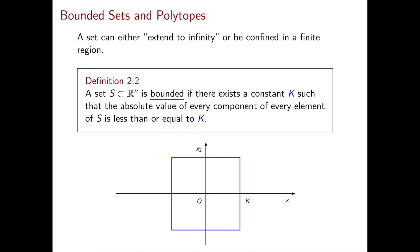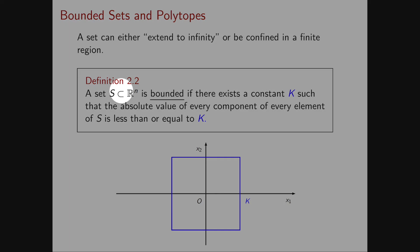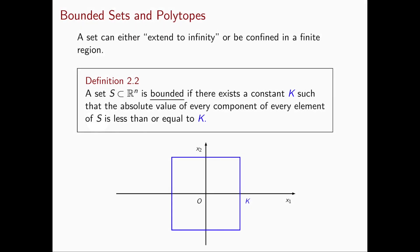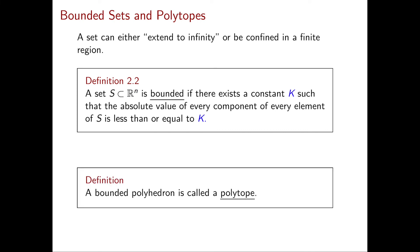To introduce the third fundamental property, I need a couple more definitions. We say a subset S of Rⁿ is bounded if there exists a constant K such that every component of every vector in S is at most K in absolute value. Graphically, bounded means the set can be contained in a large enough but finite box. A polyhedron that is also bounded is called a polytope.